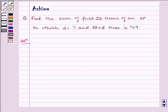Hello and welcome to the session. Let us understand the following question today. Find the sum of first 22 terms of an AP in which d equals 7 and the 22nd term is 149.